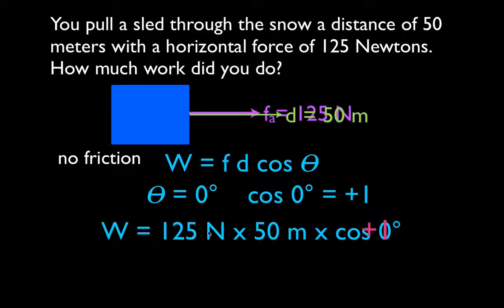So it's just 125 times 50 times 1. And when you apply a force of 125 newtons in the horizontal direction, and the object moves fifty meters, you do 6250 joules of work.